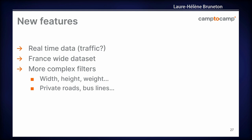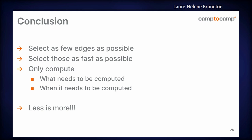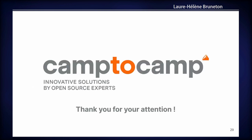In conclusion: the first point is already documented in the PG Routing manual — select as few edges as possible, this will improve your performance. Select those edges as fast as possible using indexes and other tools. Only compute what needs to be computed, and when it needs to be computed. Thank you for your attention.